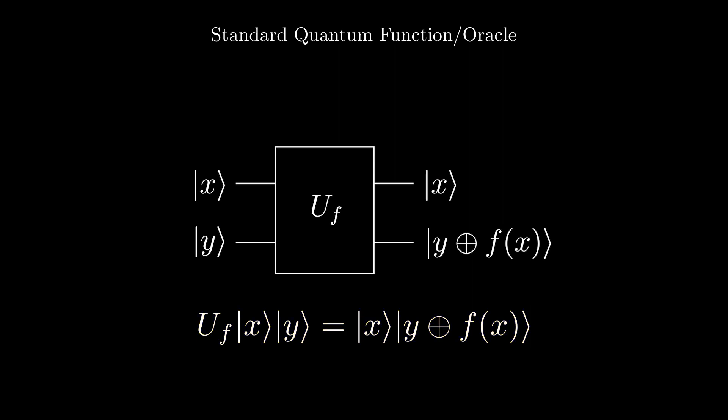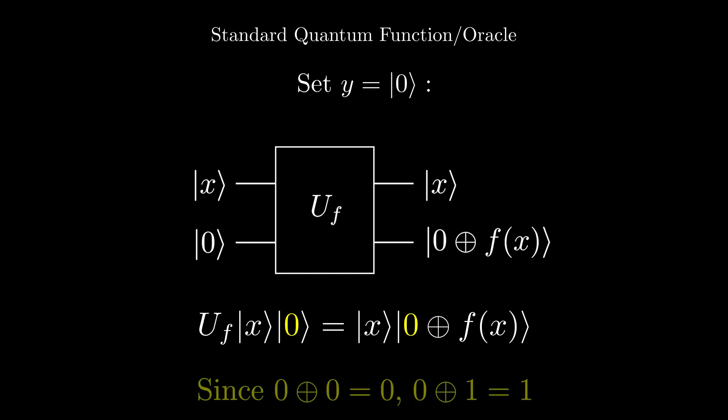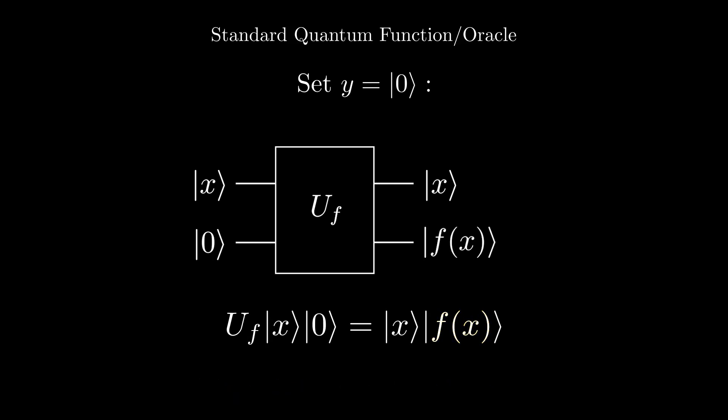But if we set y to 0, then we get 0 exclusive OR with f of x. 0 exclusive OR with any bit gives us back that bit. This means that 0 exclusive OR with f of x is just f of x. This allows us to query the function and get its output.